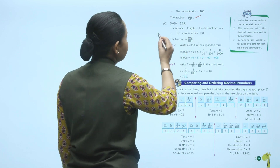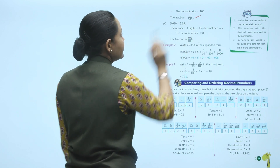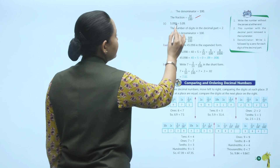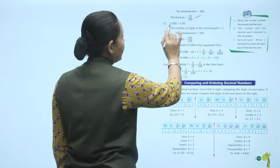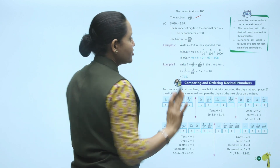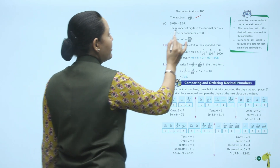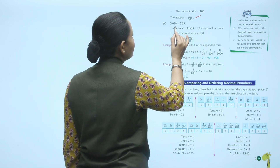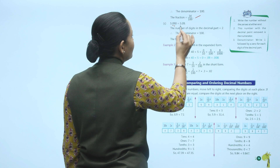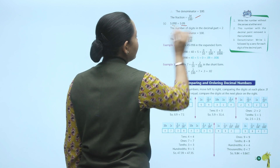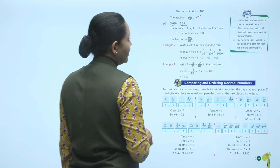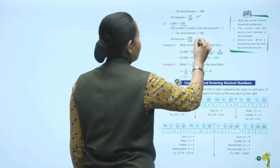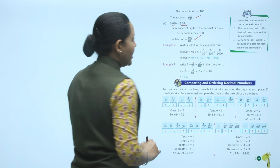Next: 5.090 — the trailing zero after 9 has no value, so effectively it is 5.09 with 2 decimal digits. The denominator is 100, giving 509 upon 100.